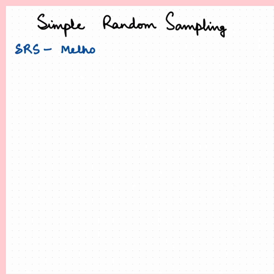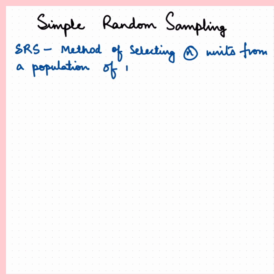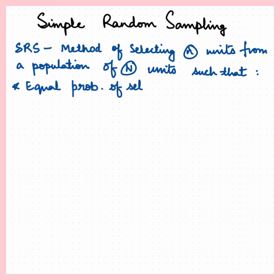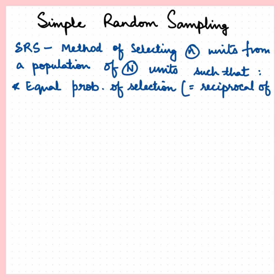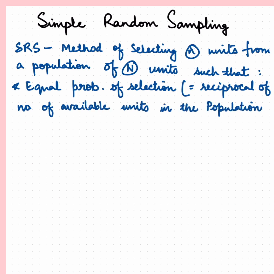We'll start with simple random sampling. Simple random sampling is a method of selecting n units from a population of N units such that every unit has an equal probability of selection, which is the reciprocal of the number of available units in the population — that is, 1/N.